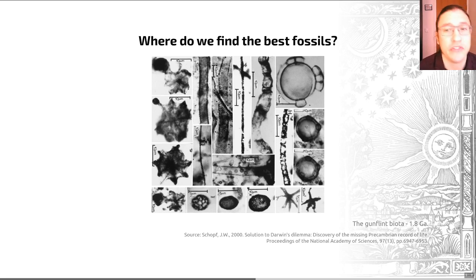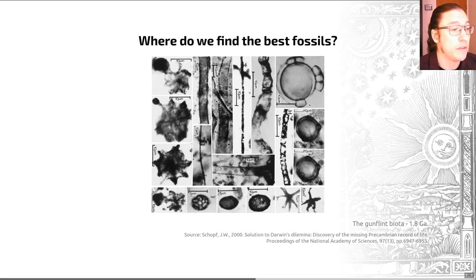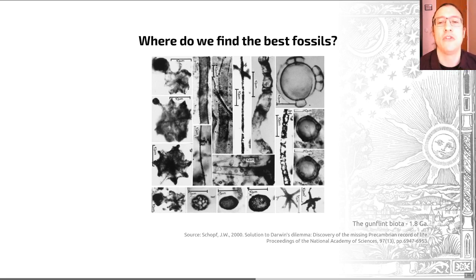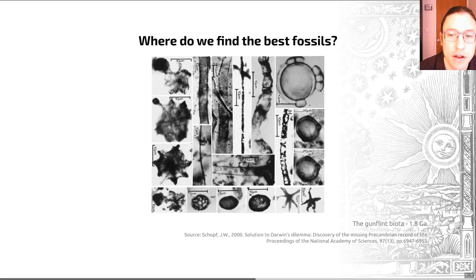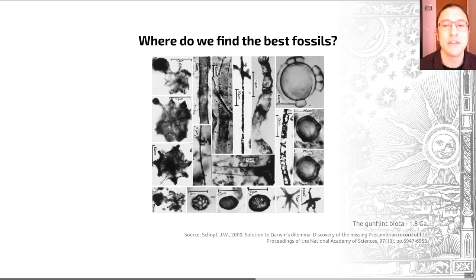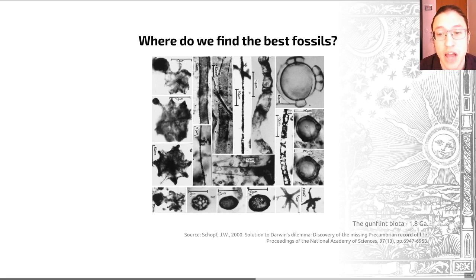Fossil deposits of generally single-celled life are found throughout this time period. One notable example is the 1,878 million year old Gunflint Formation from Lake Superior in Canada. This is a really cool and notable example of a Proterozoic ecosystem that is remarkably well-preserved, used as a benchmark for Precambrian cellular preservation, with a high number of individual microfossils and a big diversity of form.